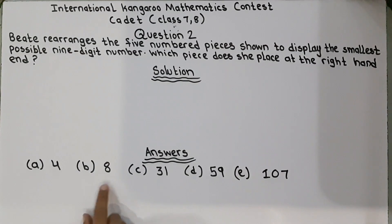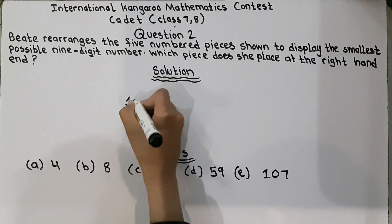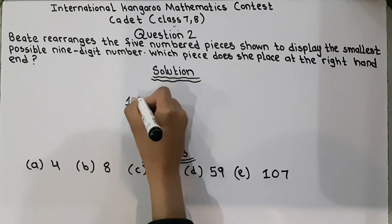So 4, 8, no, 3, no, 5, no, 1. Yes, 1 can be correct because 107. We will write 107 because 1 is the smallest number of all.